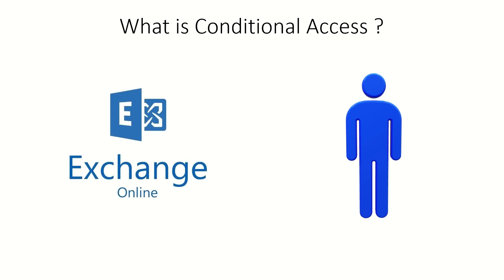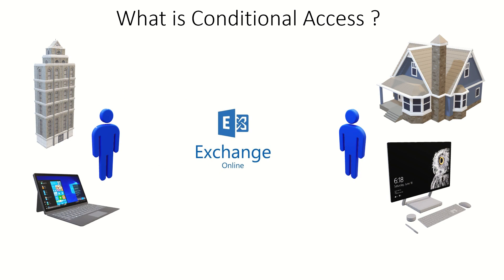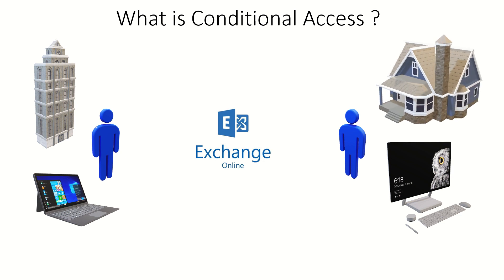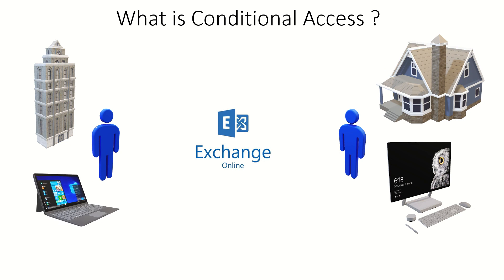Let's take the example of Exchange Online. With the proliferation of devices and making users productive wherever they are — whether in the office or working from home — we have to make sure that identity is secured and users are getting secured access to a particular resource. This user can be sitting in our corporate office or accessing the application from home or a different location. Apart from locations, we also have to figure out devices: when inside the corporate office they might be using a domain-joined machine, but at home they might be using a personal PC.